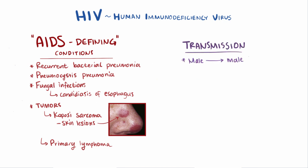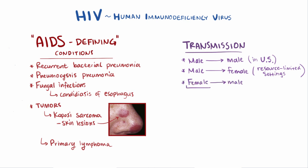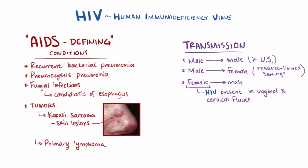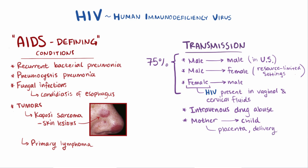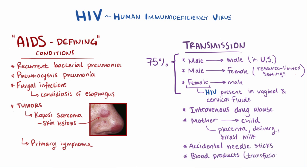Male-to-male transmission is the most common mode of transmission in the US, and male-to-female is the most common mode in resource-limited settings. Female-to-male transmission also occurs, since HIV is present in the vaginal and cervical fluids of infected women. Over 75% of all HIV cases are contracted through sexual intercourse. The next most common means include intravenous drug abuse and mother-to-child transmission via the placenta, during delivery, or via breast milk. Less common modes include accidental needle sticks and blood transfusions.